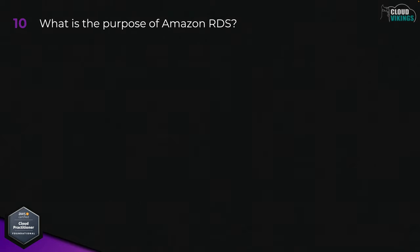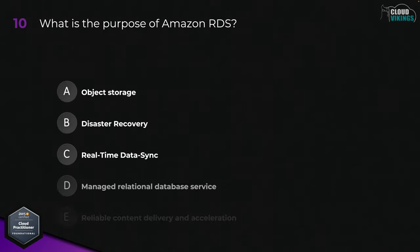Question ten: what is the purpose of Amazon RDS? Options are: A, object storage; B, disaster recovery; C, real-time data sync; D, a managed relational database service; or E, reliable content delivery and acceleration. The answer is D, a managed relational database service.